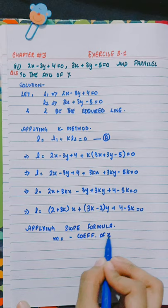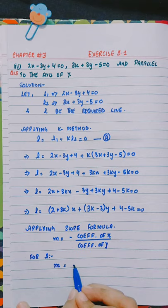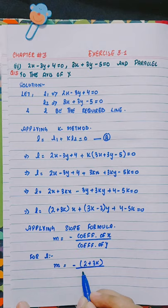Applying the slope formula: coefficient of x divided by coefficient of y. For L, m equals to minus the coefficient of x, which is 2 plus 3k, divided by 3k minus 3.